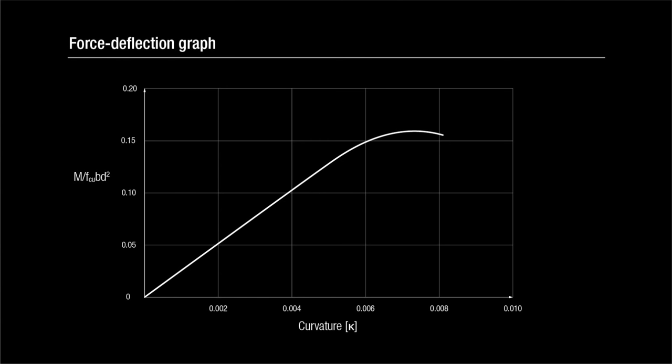The graph shows an initial linear relationship between the applied load and the vertical displacement at mid-span. Note that there is no plateauing in this plot, because the steel doesn't yield.